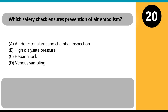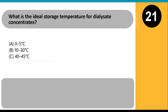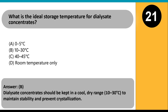Which safety check ensures prevention of air embolism? A. Air detector alarm and chamber inspection. B. High dialysate pressure. C. Heparin lock. D. Venous sampling. Answer A. The air detector ensures no air enters the venous return; visual and mechanical checks are mandatory. What is the ideal storage temperature for dialysate concentrates? A. 0 to 5 degrees Celsius. B. 10 to 30 degrees Celsius. C. 40 to 45 degrees Celsius. D. Room temperature only. Answer B. Dialysate concentrates should be kept in a cool, dry range of 10 to 30 degrees Celsius to maintain stability and prevent crystallization.